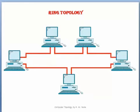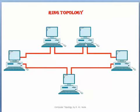In ring topology, every single computer is connected to its adjacent computer with the help of cables. Data flows in a circular fashion — the first device sends data to the second device, the second sends to the third, the third sends to the last device, and the last device is again connected back to the first device.